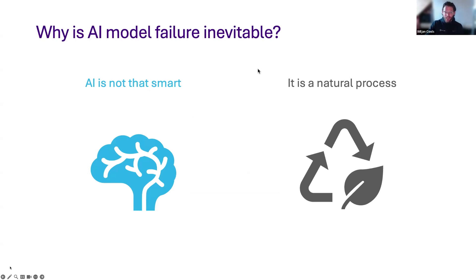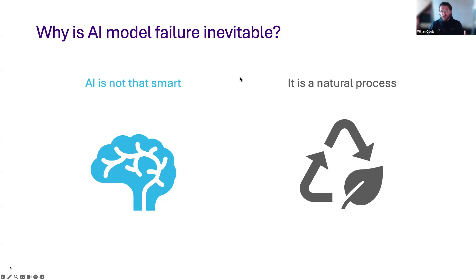Why is AI model failure inevitable? Sometimes we get the question: doesn't AI automatically update itself? Unfortunately, AI is not that smart. We're not in a world yet where things are self-supervised. From a data science perspective, what we have to do with historical data — data preparation, formatting, collection, getting examples and target data to learn from — it's a lot of effort before an algorithm can learn from it. When it gets deployed, it's a natural process: algorithms are trained on historical data, and there are new patterns that will emerge and old patterns that will become obsolete. The AI model is bound to make mistakes eventually. Model failure itself is a natural process, and it's going to happen.